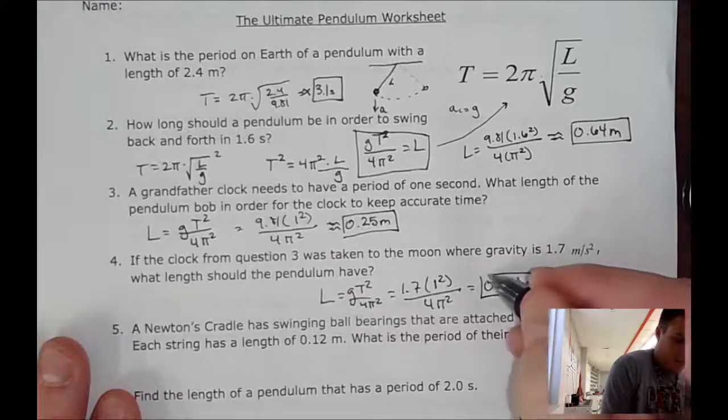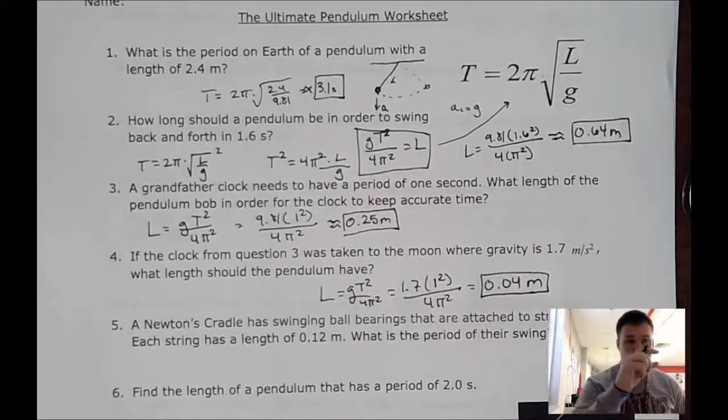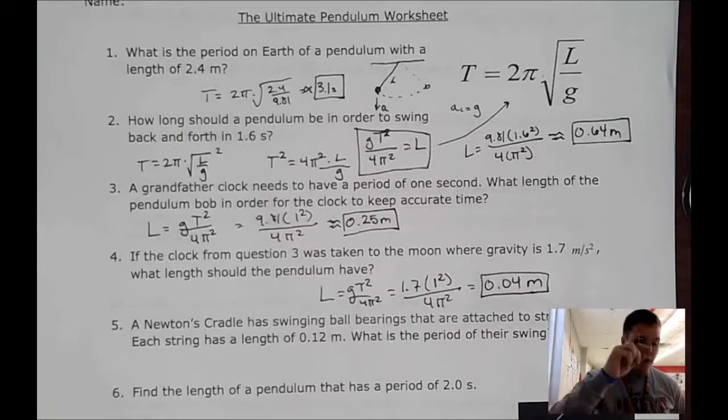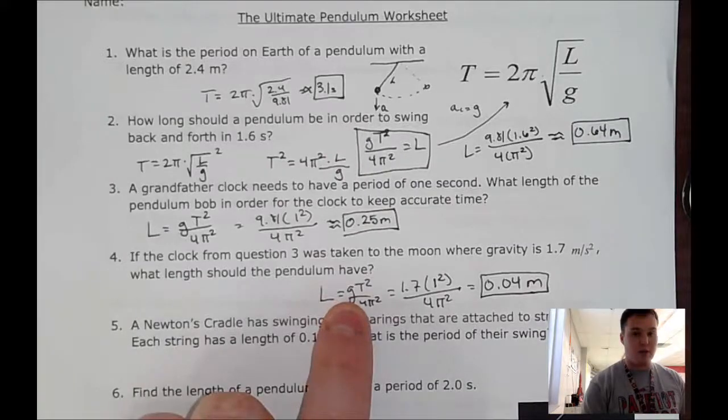There we go. So it's only 4 centimeters. So it's a very small pendulum. And that makes sense. So you're getting a smaller number on top, the same number on bottom. Thus, the length is going to drastically decrease.